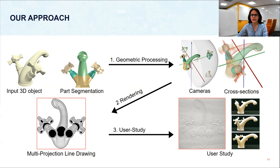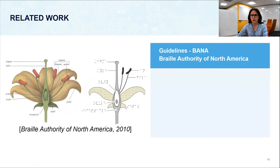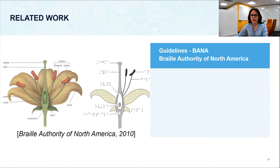Related work and background material often focus on improving perceptibility of tactile images. Based on findings of this work, many guidelines have been made. They contain many rules and cannot be universally applied. One such document is published by the Braille Authority of North America (BANA), which we use to design the baseline images for our study. I will illustrate three key elements of these guidelines using a figure as an example. On the left is the original image, while on the right is the corresponding tactile image.